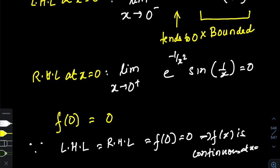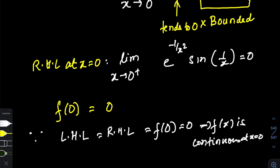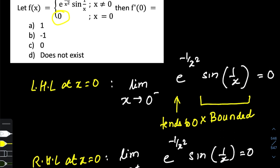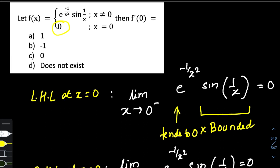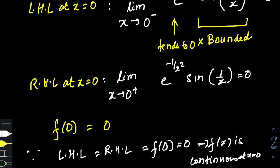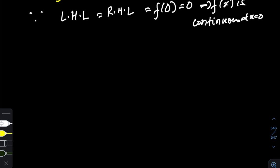Since there is no issue with continuity, let's now move on to checking the left-hand derivative and right-hand derivative at x equal to zero. If they are equal, the function will be differentiable at x equal to zero, and that common value will be the derivative of the function.